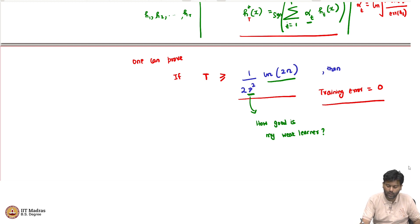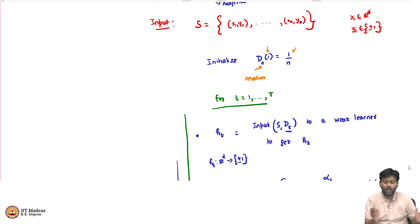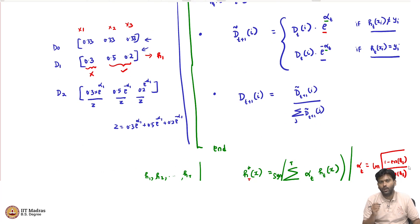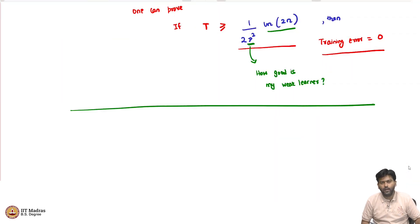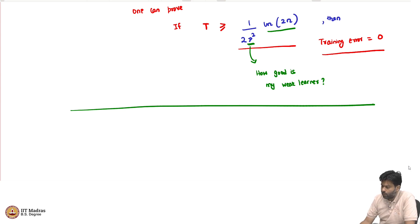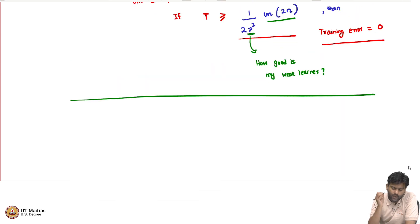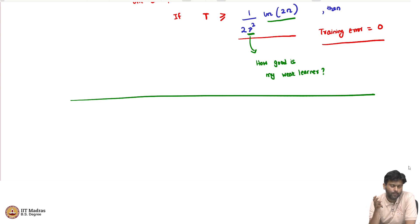This is the power of boosting. Previous versions of boosting needed to know gamma — how weak the weak learner is — as part of the algorithm itself. But AdaBoost does not use that at all and still drives the training error to 0. However, what we really care about is performance on test data, so we need to think about how boosting performs there.